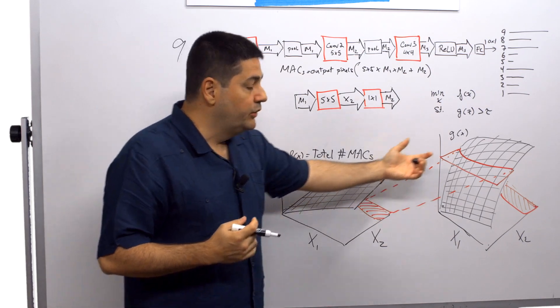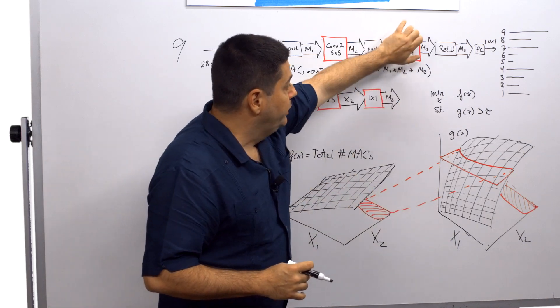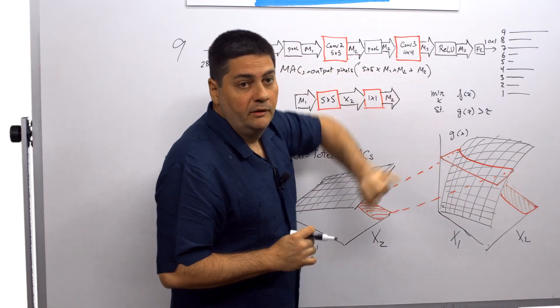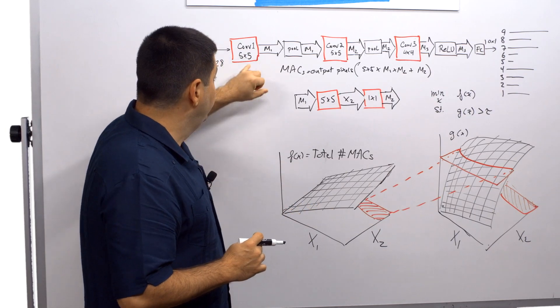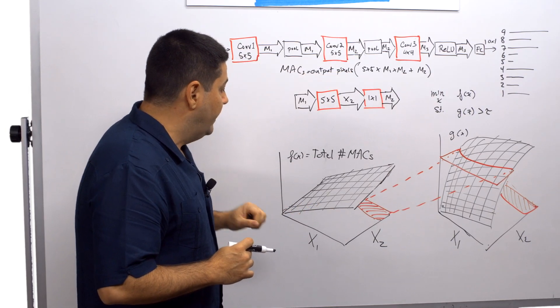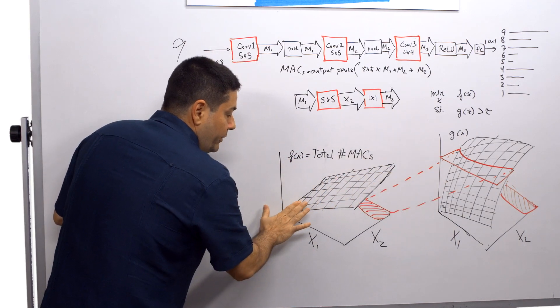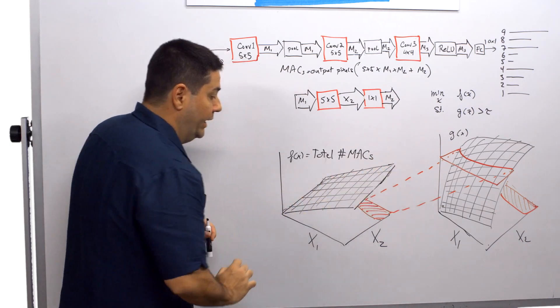We can actually solve it here visually for this example. If we hold x3, if we don't optimize this block, we hold it constant, and we just worry about optimizing x1 and x2, then we can visually see what's happening here. Here, f of x is the total number of multiply accumulates, which is in this case a plane.